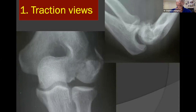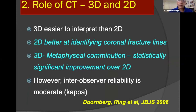Getting a CT has become routine for all distal humerus fractures because it enables a 360-degree view. In our department, we found that 3D CTs are much easier to interpret for most surgeons than 2Ds. 3Ds are better to analyze metaphyseal comminution and better for understanding hardware placement. However, 2Ds are better for identifying coronal fracture lines.